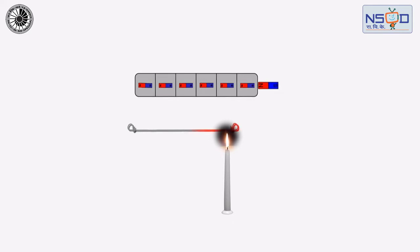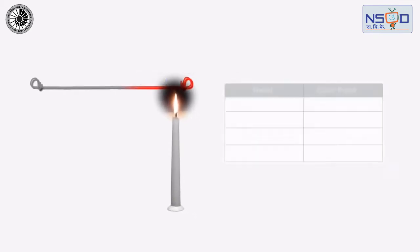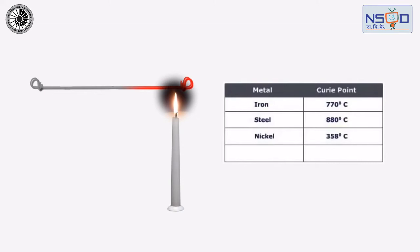The material no longer exhibits ferromagnetic properties. The temperature at which this occurs is called the Curie point.